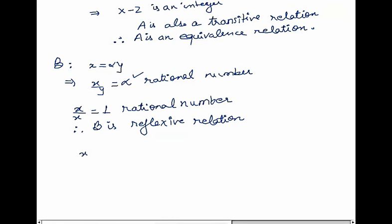Now if we have x/y equal to alpha, it does not imply that y over x will also be a rational number. It is not possible in every case.